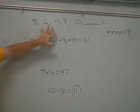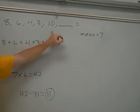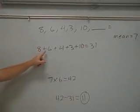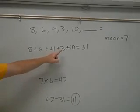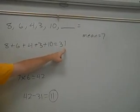Just like when you find the mean, we need to add up the numbers that we already know. So we do 8 plus 6 plus 4 plus 3 plus 10 equals 31.